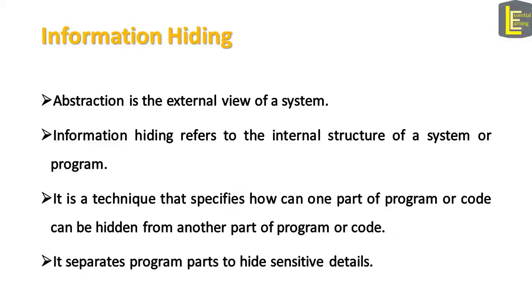Information hiding is the same concept as abstraction. While abstraction is the external view of a system, information hiding refers to the internal structure of a system or a program. It is a technique that specifies how one part of a program or code can be hidden from another part. The aim of information hiding is to separate program parts to hide sensitive details.